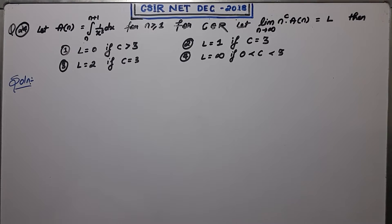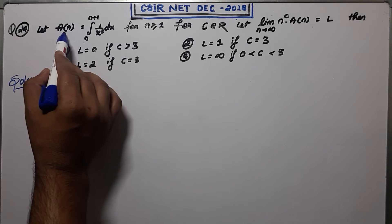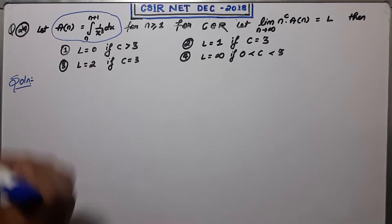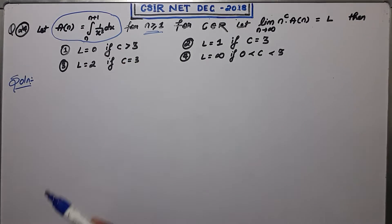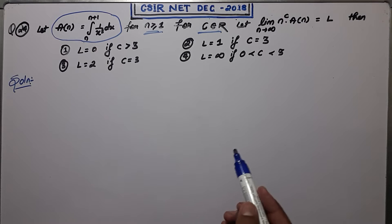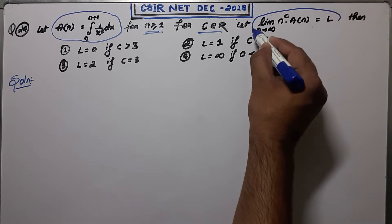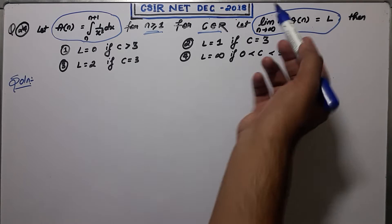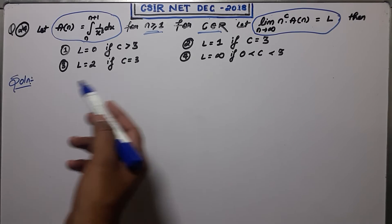Welcome guys, this is the 24th question of NET December 2018, from Part B. Let a_n be defined as an integral for n greater than 1, where n varies from 1 to infinity. We have a number C that belongs to R. We have to find the limit and determine for what value of C we get L, then find both L and C from the given options.